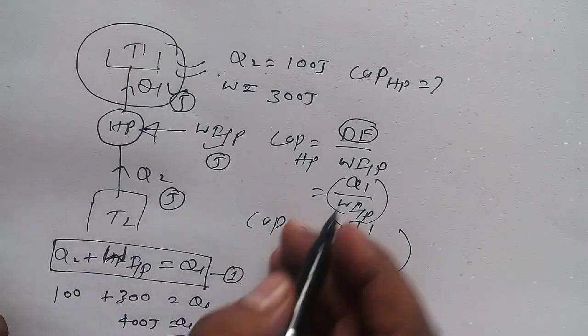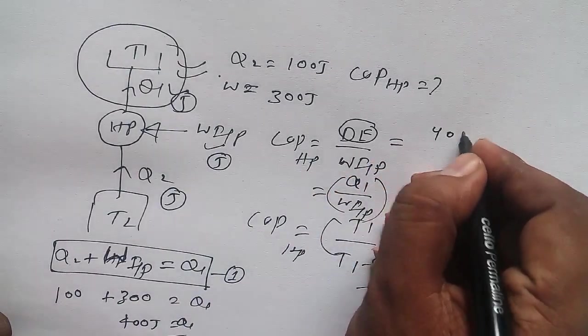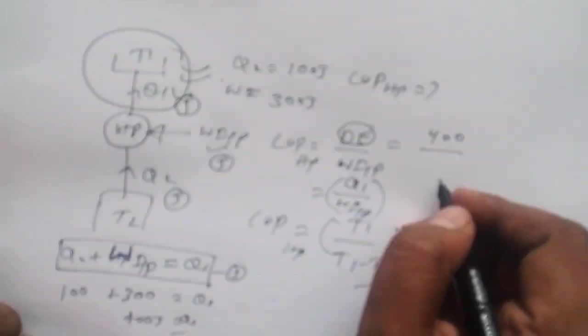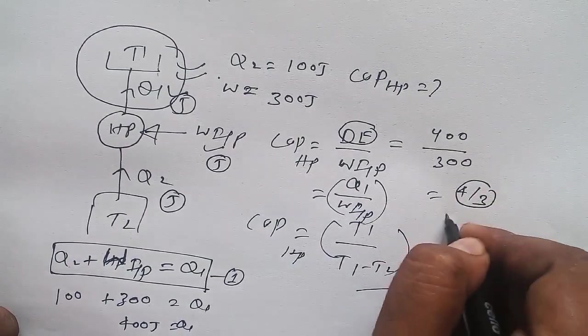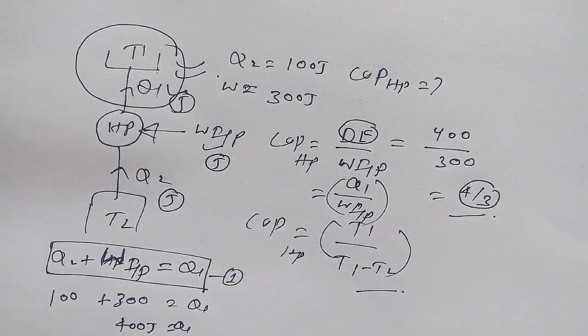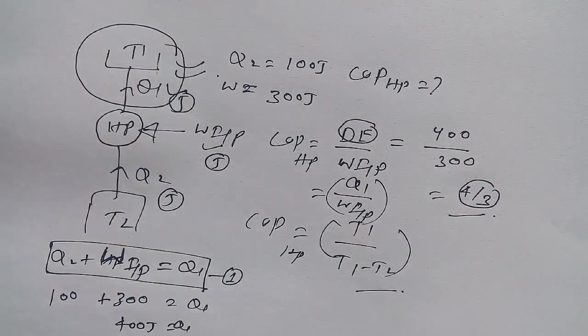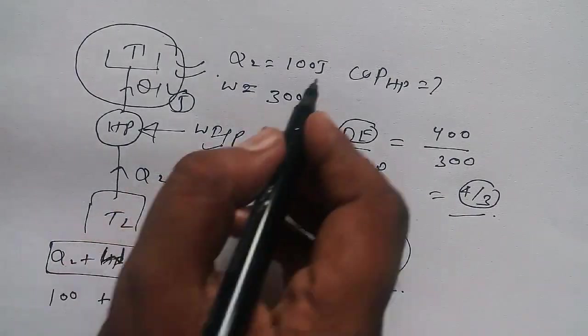Now what we got: desired effect is 400 joules and the work input is 300 joules, so the answer would be 4 upon 3. The COP of the heat pump would be 4/3 for this case.